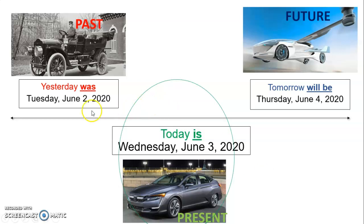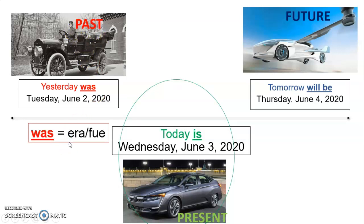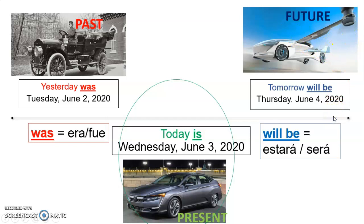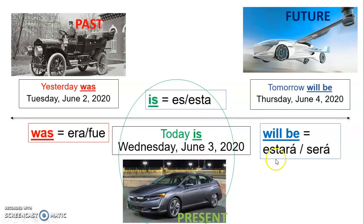Y hemos hablado de eso, pero solo quiero revisar. Cuando decimos 'was,' estamos hablando del past, o del pasado. So 'was' means era, o fue, o estaba. When we say 'will be,' we are talking about the future. So 'will be' means estará, o será, o va a ser. When we say 'is,' estamos hablando del present, del presente — we're talking about something that is true or happening in the present. So 'is' means es o estar.